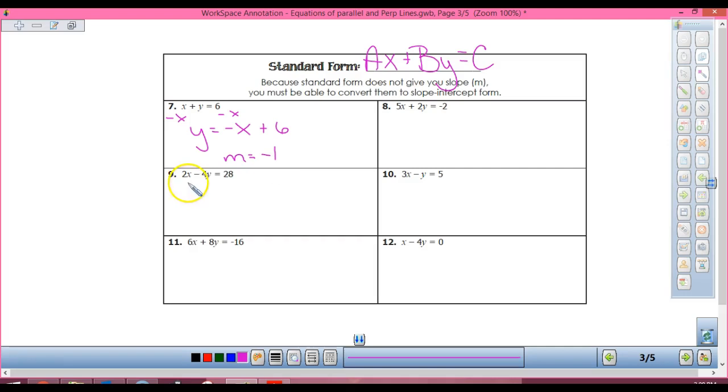The biggest thing that we want to pull out of these, because remember we're going to begin doing whether it's parallel or perpendicular. So the biggest thing that we want to pull out of there is the slope, right? So we're going to subtract 2x first step.